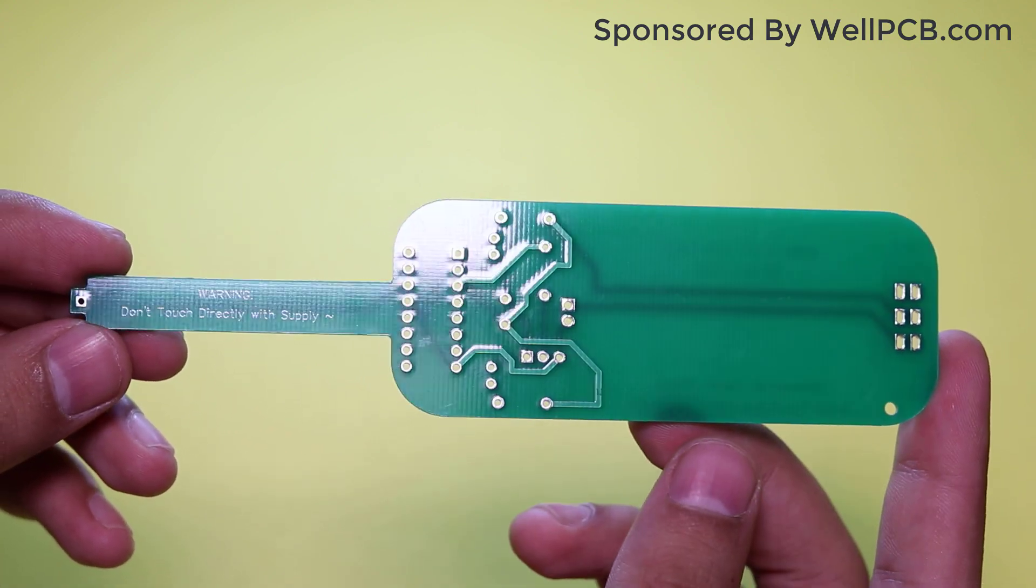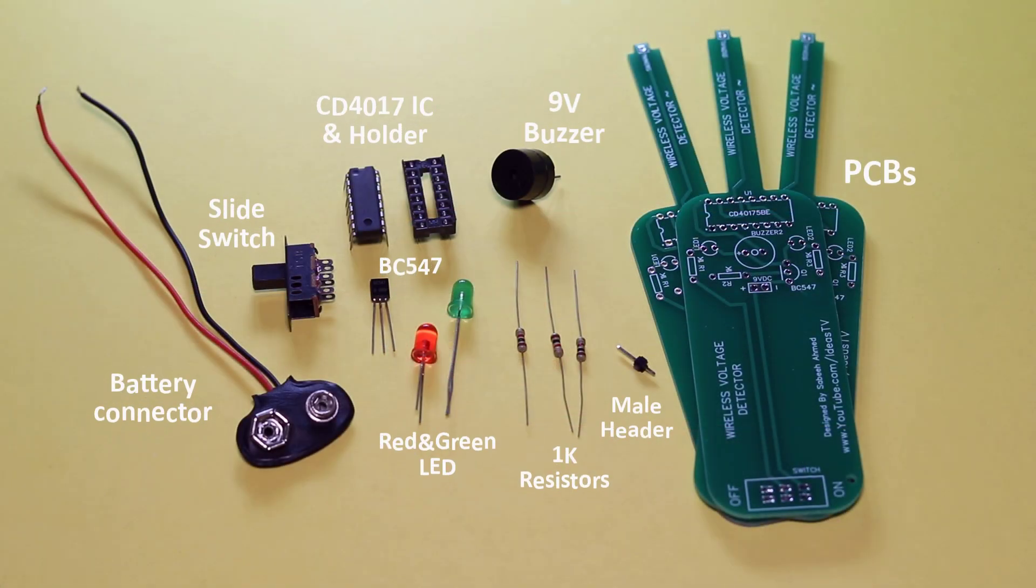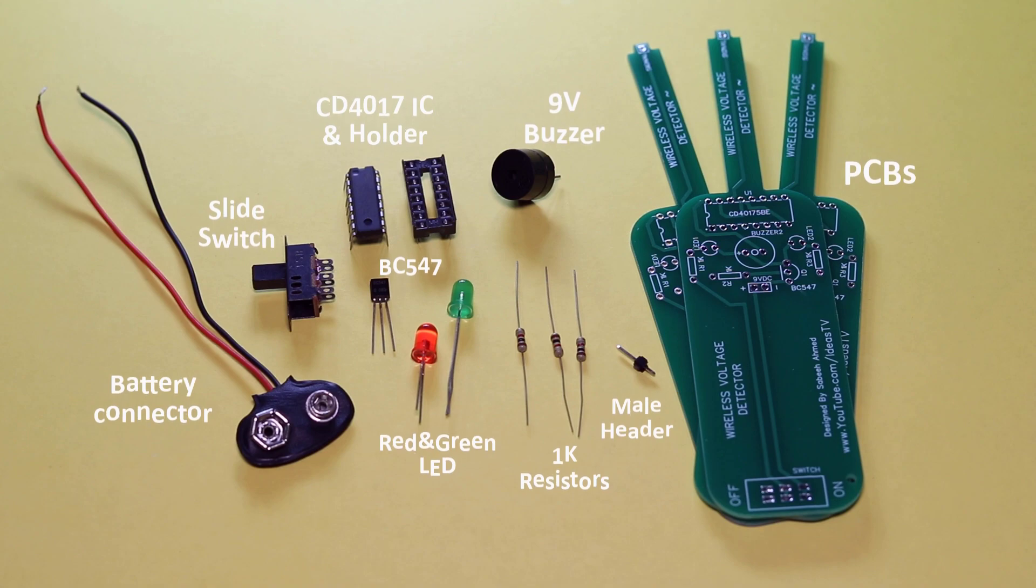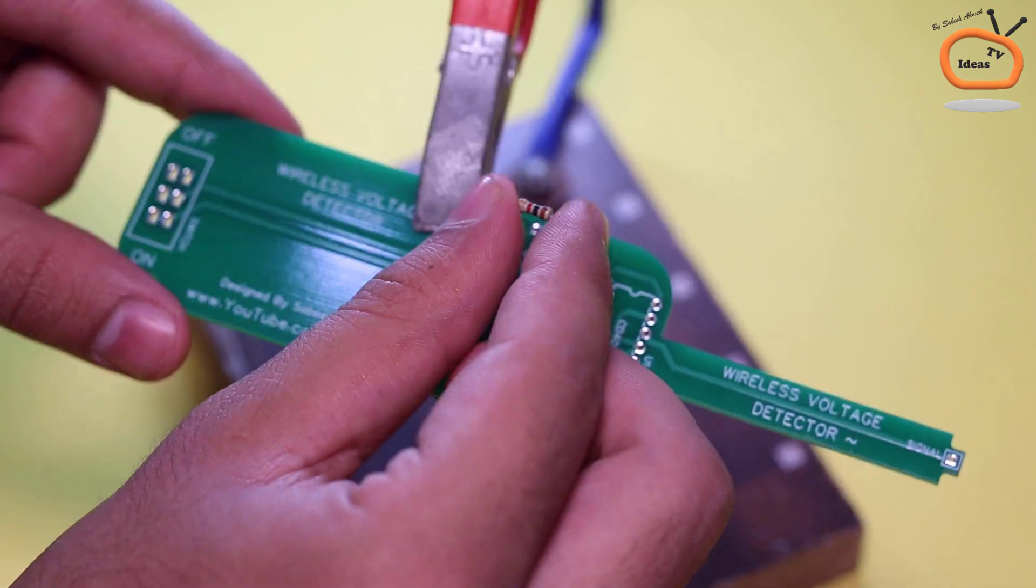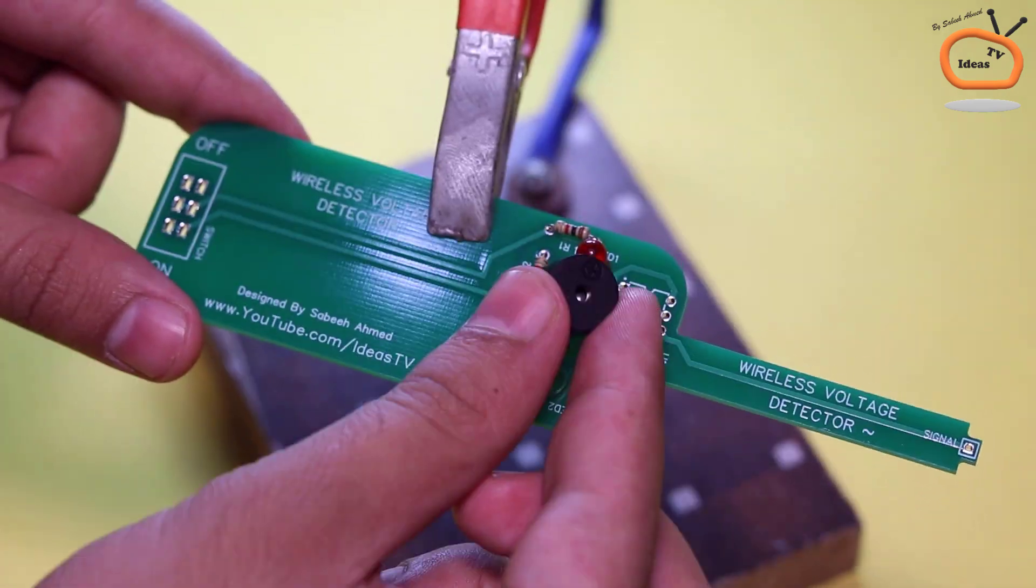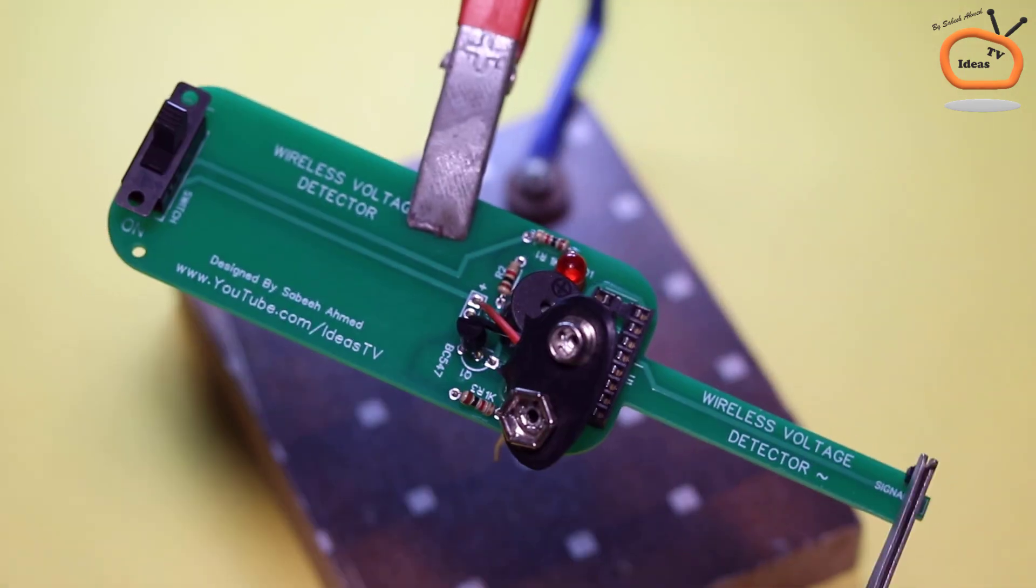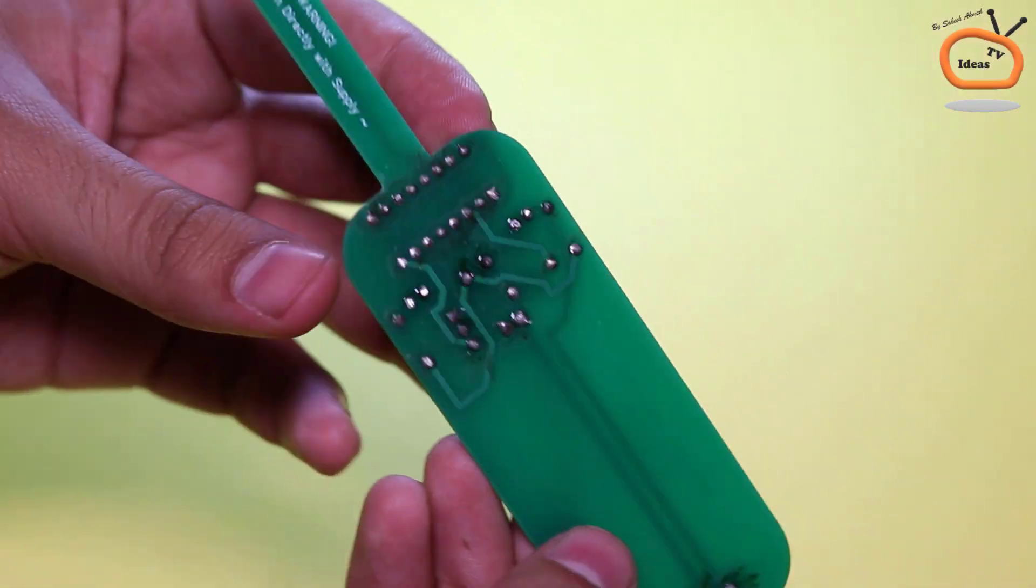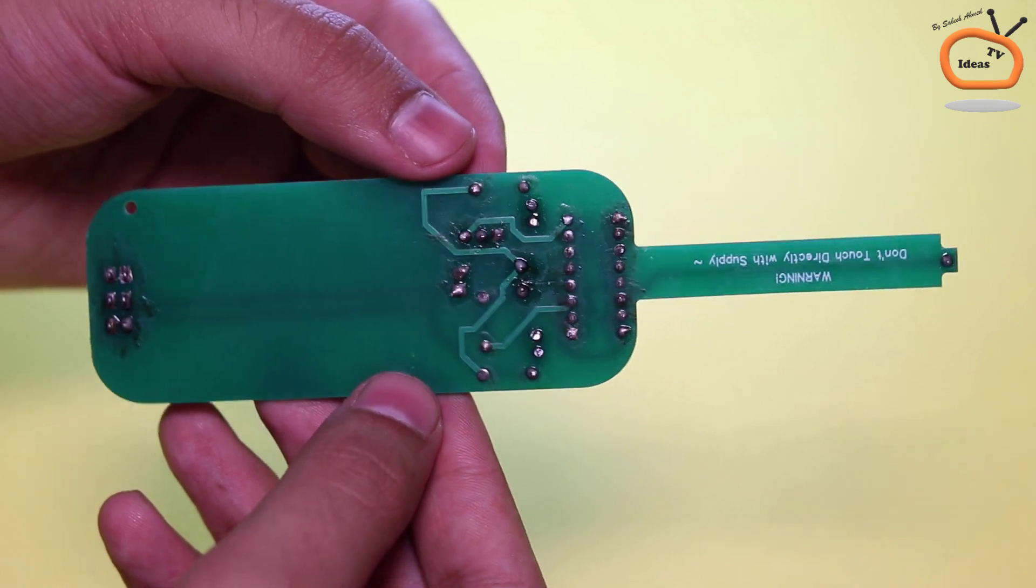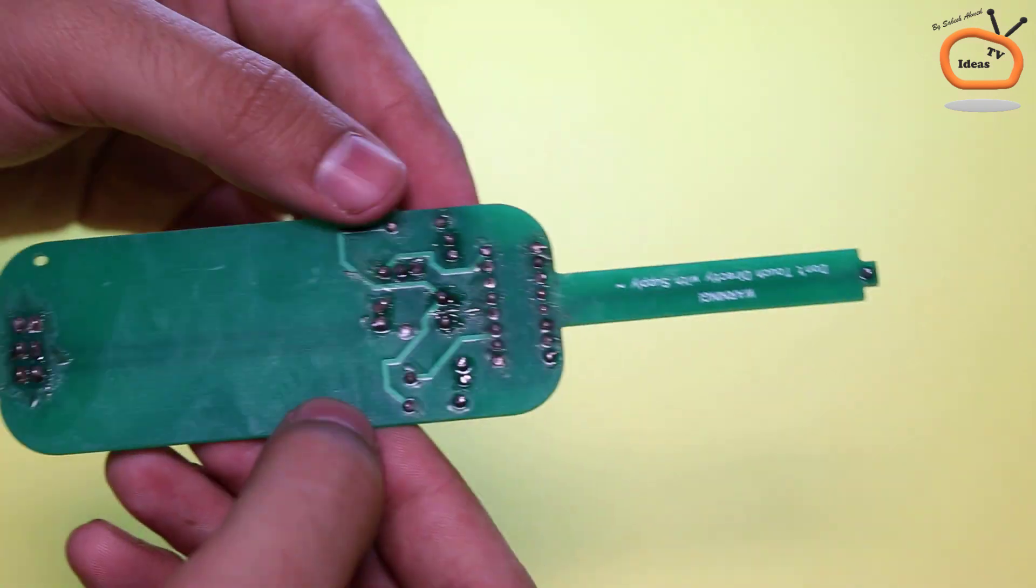So these are all the required components for this project. You can find the list of all components in the video description. Now I am soldering all the components to the printed circuit board according to the schematic. After the soldering, our circuit is now almost ready. Now let me show you how it looks.